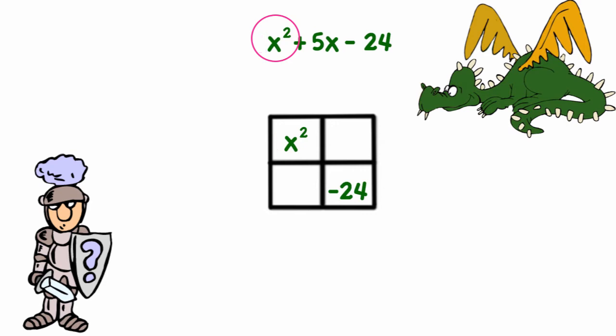Okay, let's look at x². Well that had to have originally been x times x because those are the only two factors of x². Now we're going to look at the negative 24.